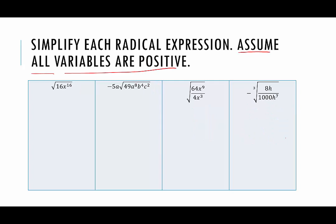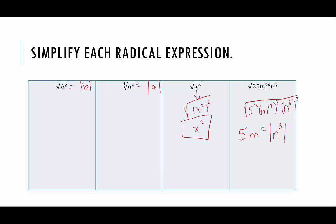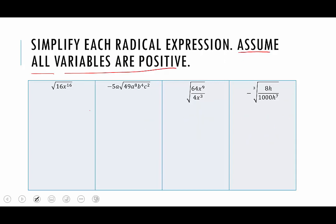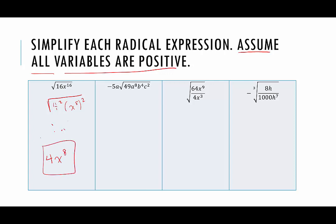In our next examples, we do get to assume all variables are positive, meaning we don't have to worry about absolute values anymore. We're also going to look for a shortcut — is there a simpler way rather than always rewriting everything as perfect squares? So we have the square root of 16x to the 16th. 16 is 4 squared, and x to the 16th is x to the 8th squared. The square root of 4 squared is 4, and the square root of x to the 8th squared is x to the 8th. The result is 4x to the 8th.